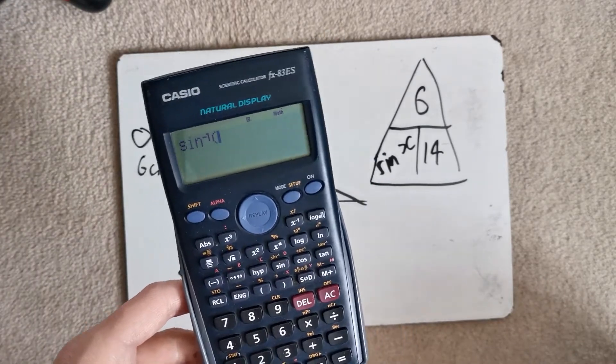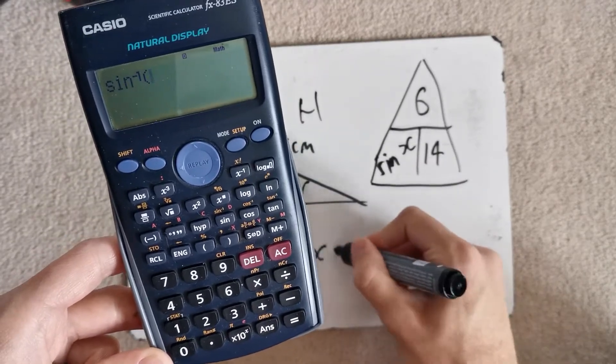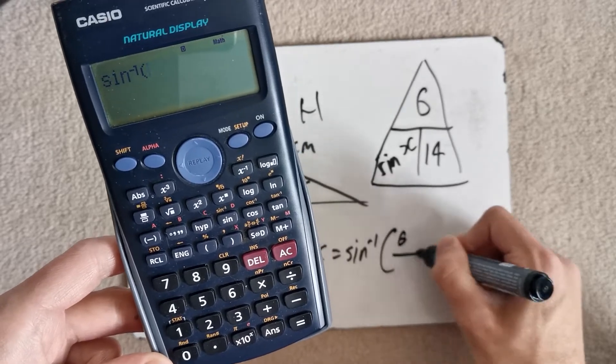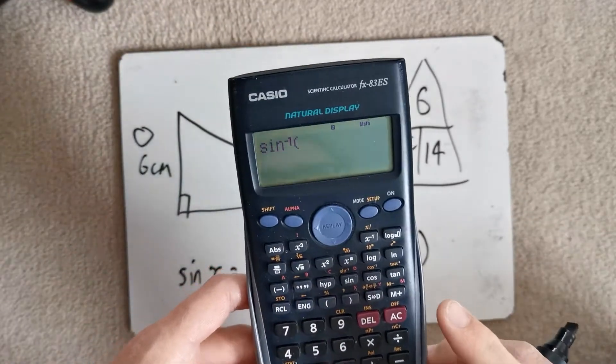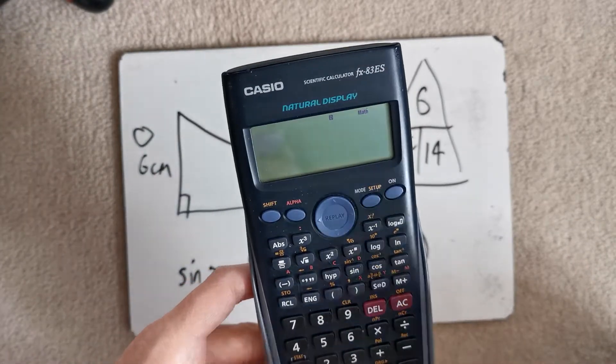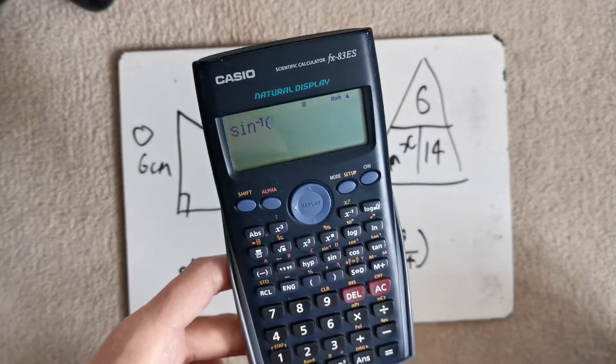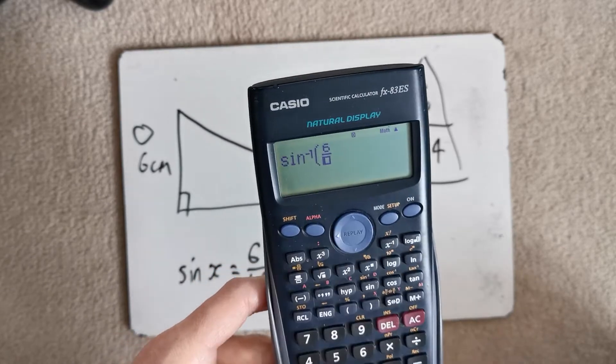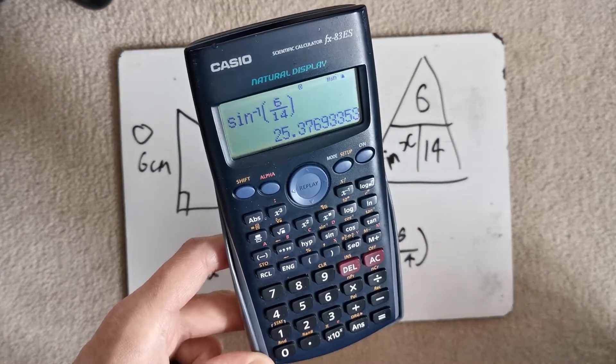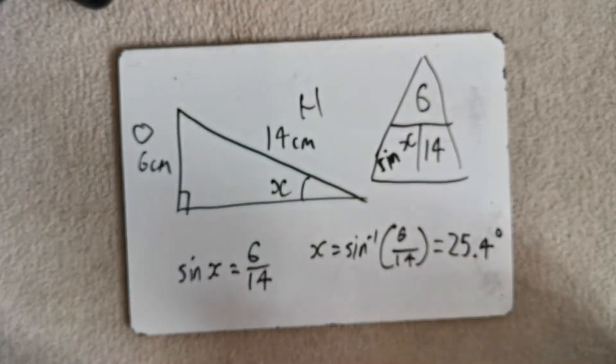Apologies for that, I just got a message. And so, to find out what X is, we have to do inverse sine, shift sine, of 6 divided by 14. A couple of ways you can put that into your calculator. You could either put 6 divided by 14, close the brackets, gives you the answer, or you could put shift sine, so inverse sine, of fraction button 6 over 14. Both ways are right. Both ways will give you the exact same answer of 25.4 degrees. And that's our answer.